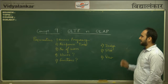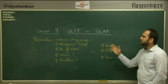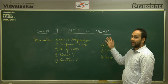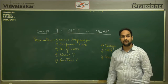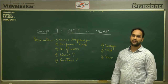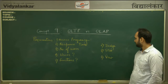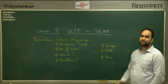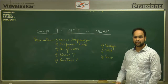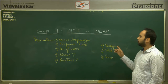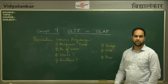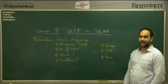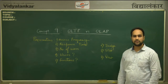The seventh parameter is size. The size of OLTP is small, maybe in MBs, whereas the size of OLAP is large, maybe in GBs, because it holds historical as well as current data. The eighth and last parameter is view. The view of an OLTP system is flat relational, whereas the view of OLAP is multi-dimensional. That concludes Concept 9: OLTP versus OLAP.